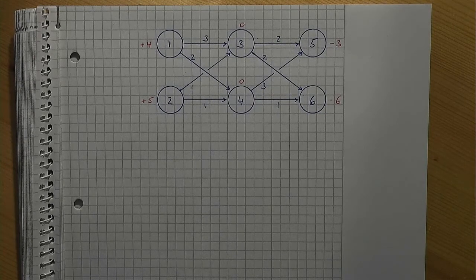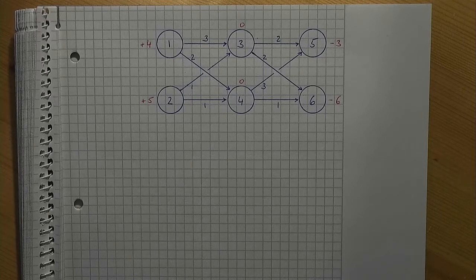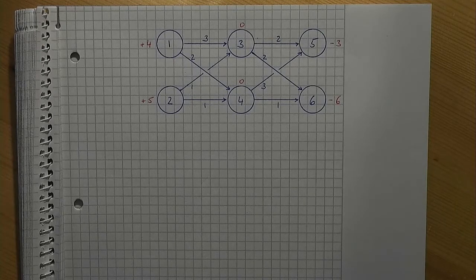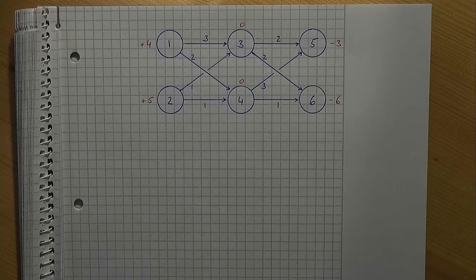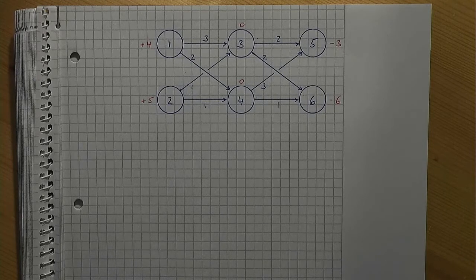Recall that Bi greater than 0 indicates a source, Bi less than 0 indicates a sink, and Bi equals 0 indicates an intermediate node. A possible model formulation for the min-cost network flow problem looks like this. As said before, the objective is to minimize the total transportation cost.